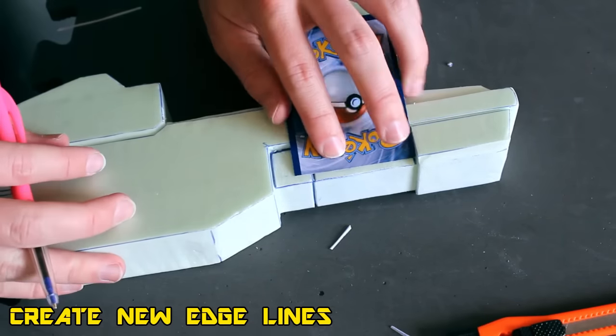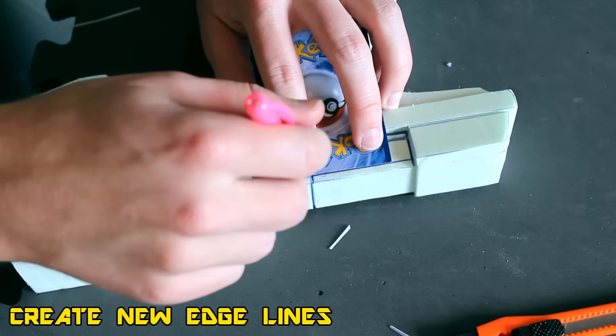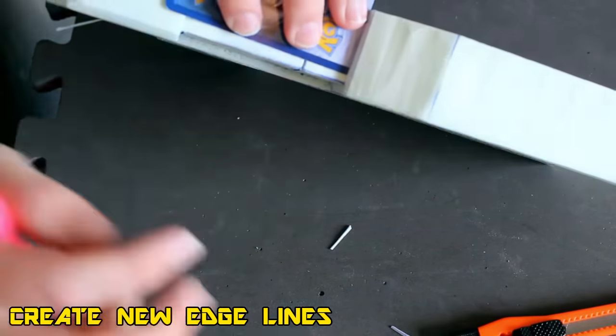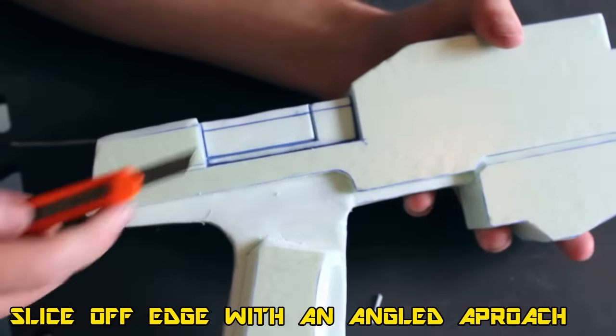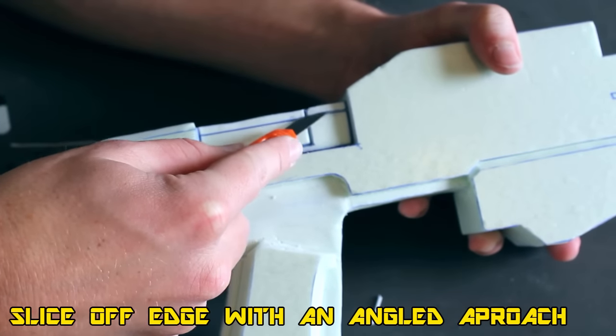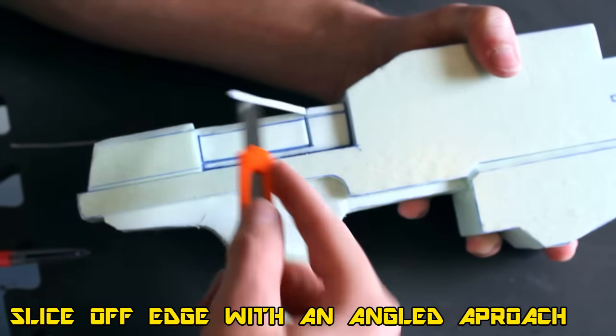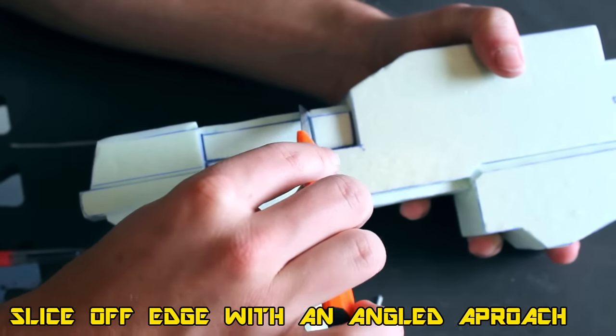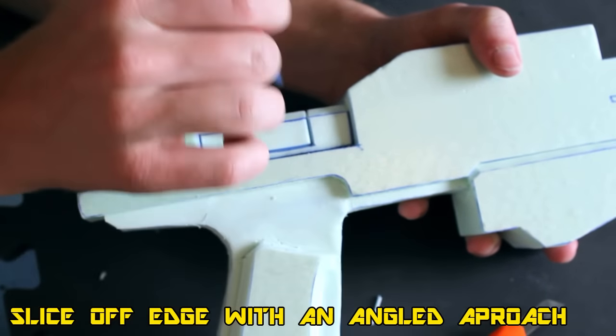Once you've done the beveling, you're going to add some edge lines to it because we're wanting to give a little beveled edge to this as well. Just like you did earlier, create that little edge line about a quarter inch in and then go ahead and just slice it off nice and clean. It gives it a far nicer rounded design.